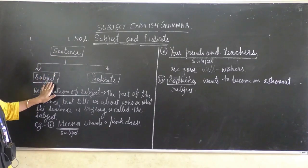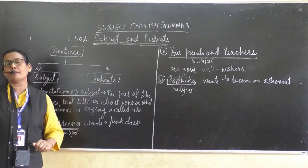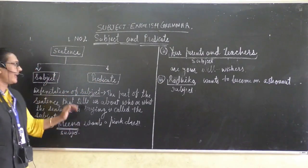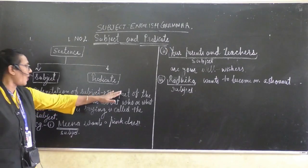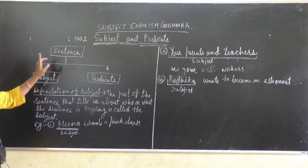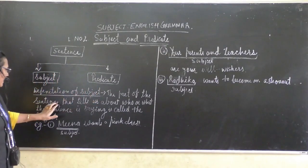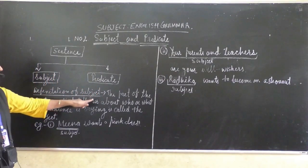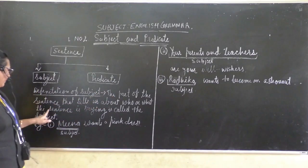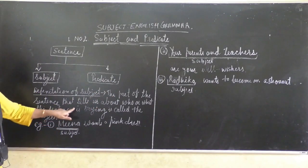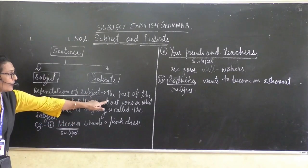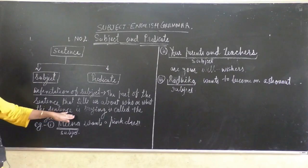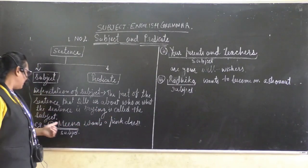So this sentence is divided into subject and predicate. Now, here we are learning what is the subject first. What is the definition of subject? The subject is the part of the sentence that tells us about who or what the sentence is about.